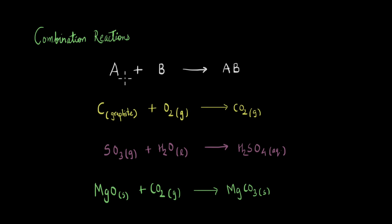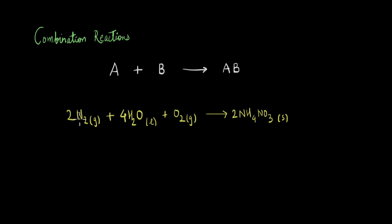Although we have only represented this reaction having two reactants, combination reactions are not restricted to only two reactants — there could be two or more reactants forming a single product. For example, nitrogen reacting with water and oxygen to give ammonium nitrate, where you can see three reactants combining to give one product.